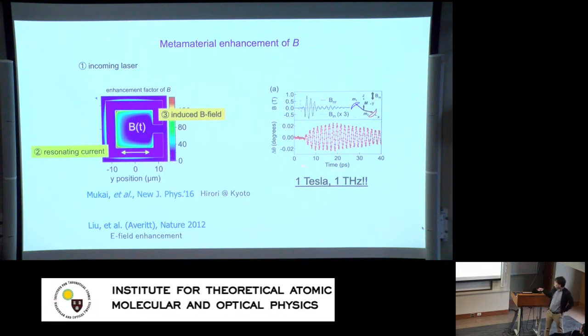In this experiment we are already capable of generating a magnetic field that oscillates in the terahertz regime, with a field strength on the order of one tesla — so this metamaterial approach can generate very strong oscillating magnetic fields.